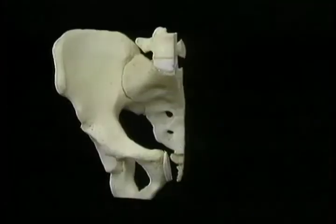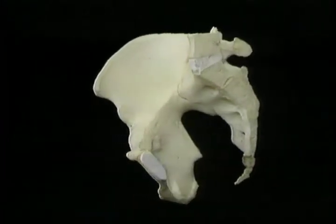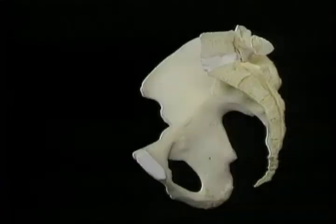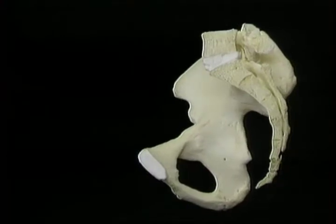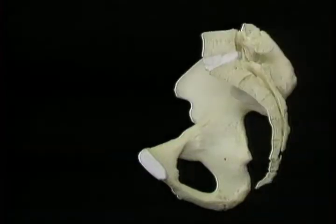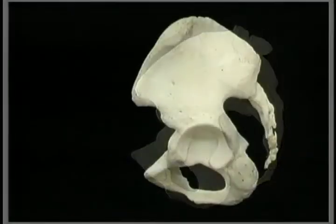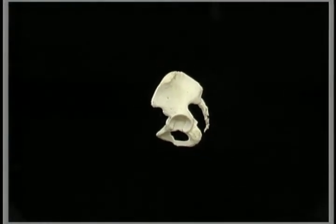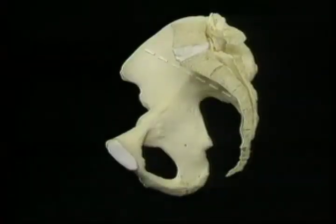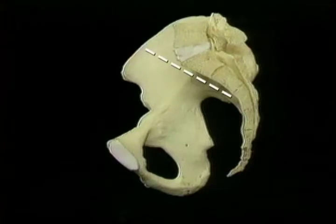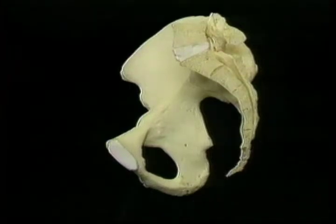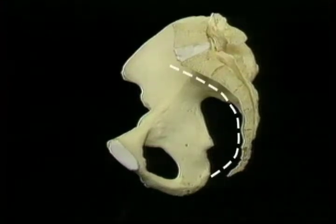We looked at the features of the upper part of the bony pelvis in the last section. The bones that contribute to the walls of the pelvic cavity are the sacrum and the coccyx behind, and the lower parts of the hip bone in front and at the side. In the upright position the surface of the upper part of the sacrum is angled at 30 degrees to the horizontal. The tip of the coccyx points forward at about 40 degrees, so the pelvic surfaces of the sacrum and coccyx form a curve of a bit more than a quarter circle.